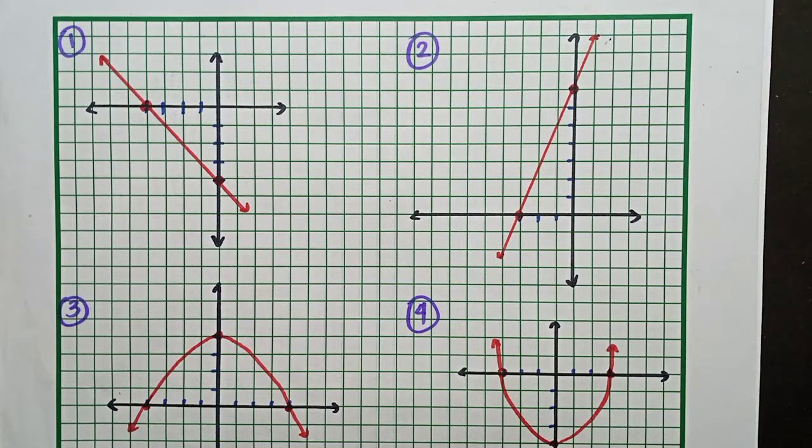In this video, I'm going to teach you how to determine the x and y intercept of a graph. Here we have four graphs numbered 1, 2, 3, and 4, and we're going to find the x and y intercept for each one of these.